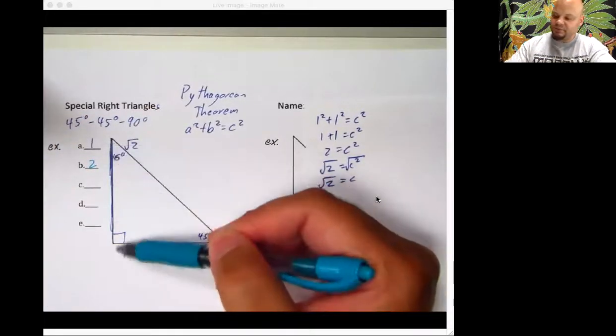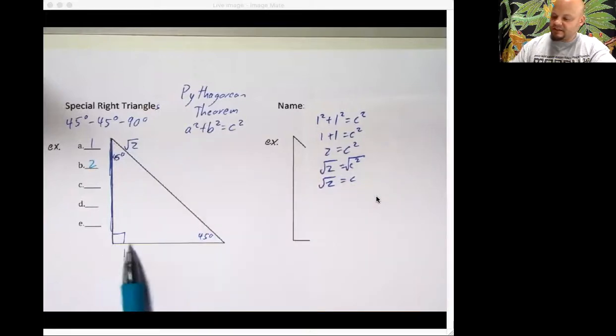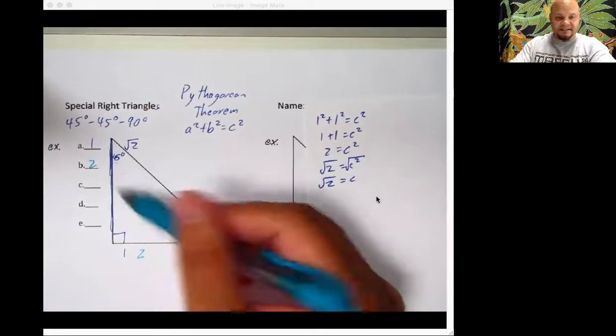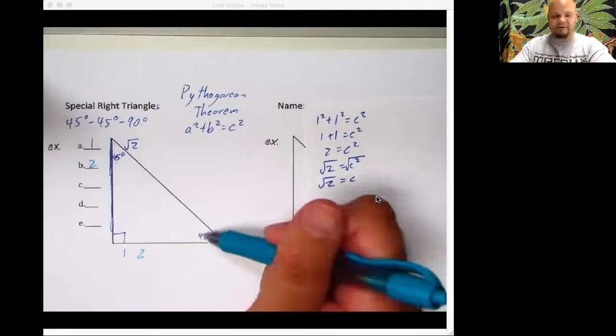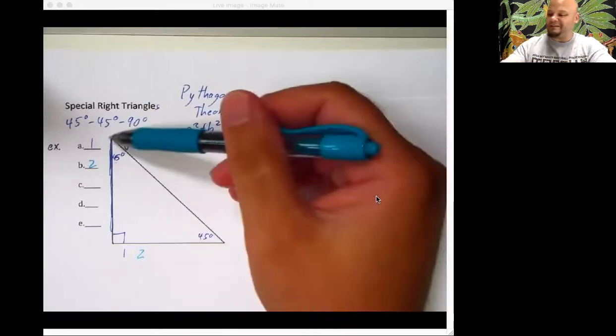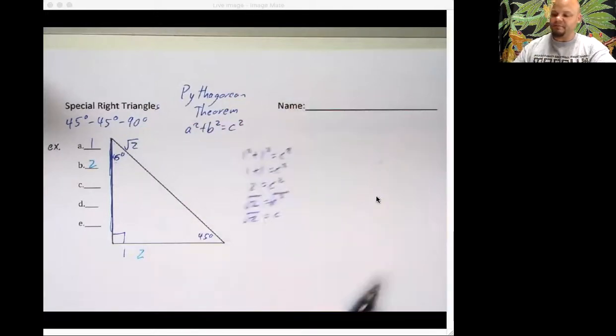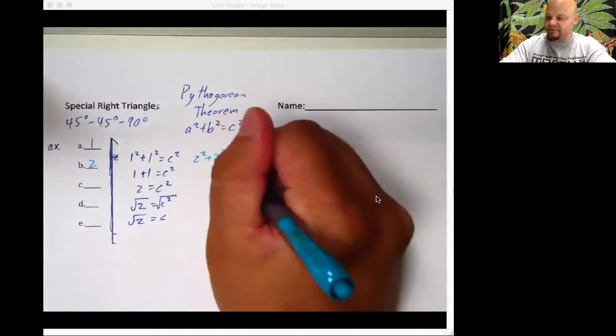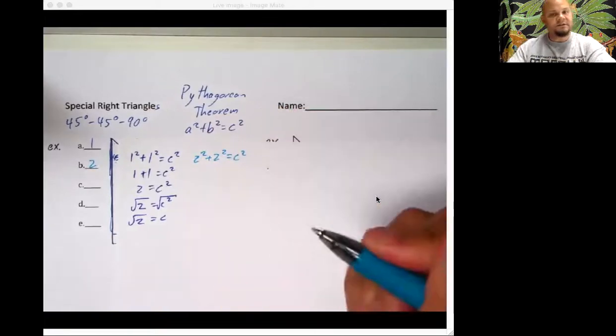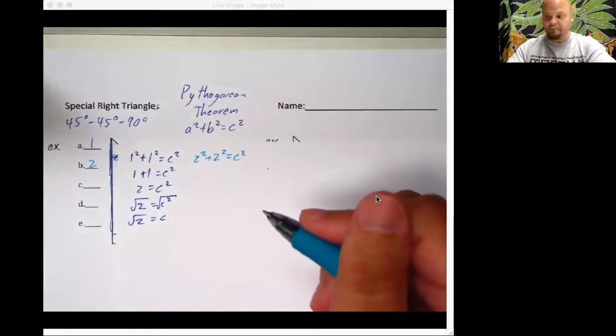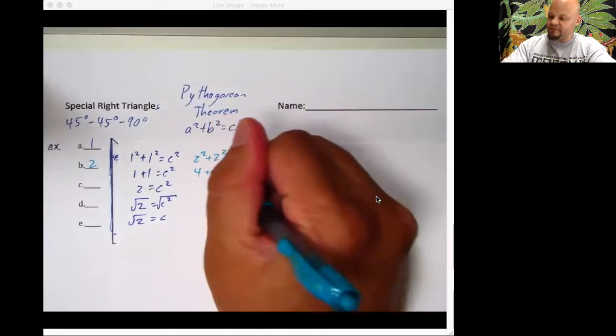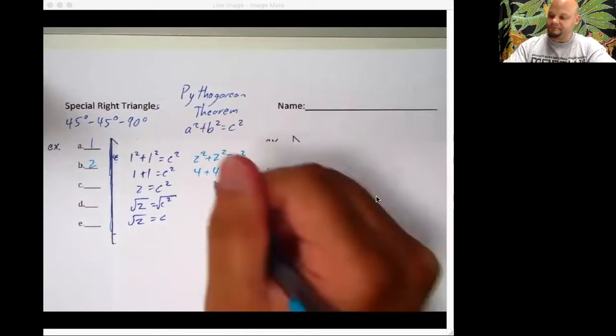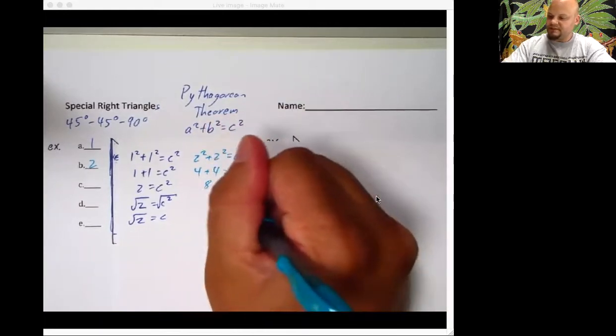Let's try a side length of two. So if this is two, how long is this side right here? If you said two, you were correct. These two guys have got to be the same because of that 45 degree and the 45 degree. But how long is this? Well, let's go back to our work page. There's our old work. This time we're working with two squared plus two squared is equal to C squared. Okay, four plus four is equal to C squared. Eight equals C squared.